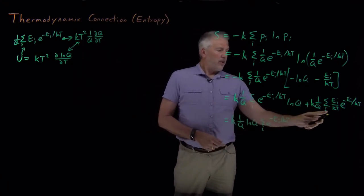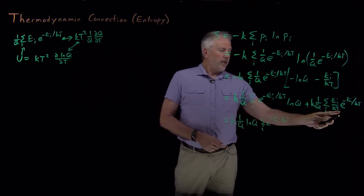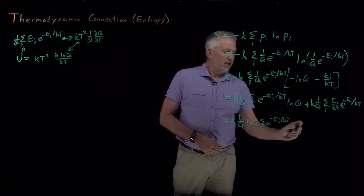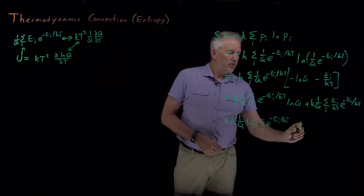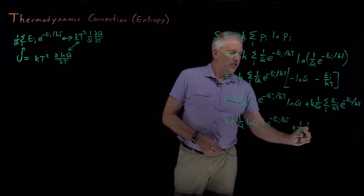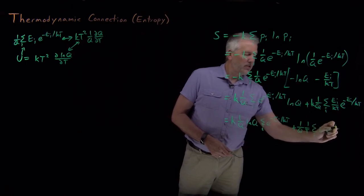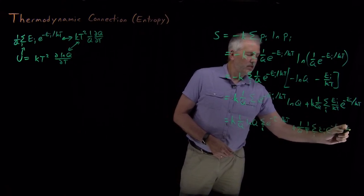And the second term, the only thing I can pull out is the 1 over kT. I've got a k outside and a 1 over k inside, so those cancel. And I have 1 over q, 1 over t, sum of energies times e to the minus energies over kT.